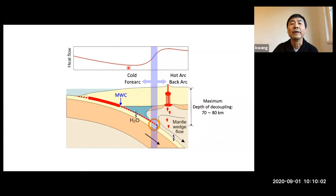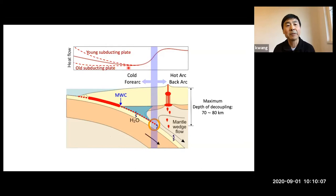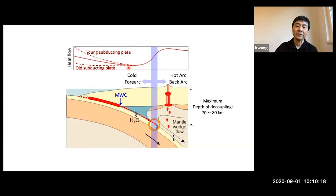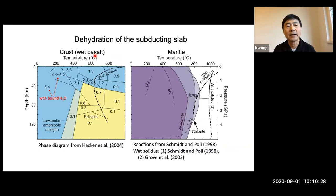Still, the forearc can differ between subduction zones depending on the age and thermal state of the incoming plate. Younger plates bring in more heat; colder plates cause a lot of differences. The most important difference is how the subducting slab dehydrates. Let's look at the phase diagrams of the subducting crust and subducting mantle. The numbers represent the water bound in the minerals. You don't need to worry about the details — the blue area is essentially metabasalt and yellow is eclogite.